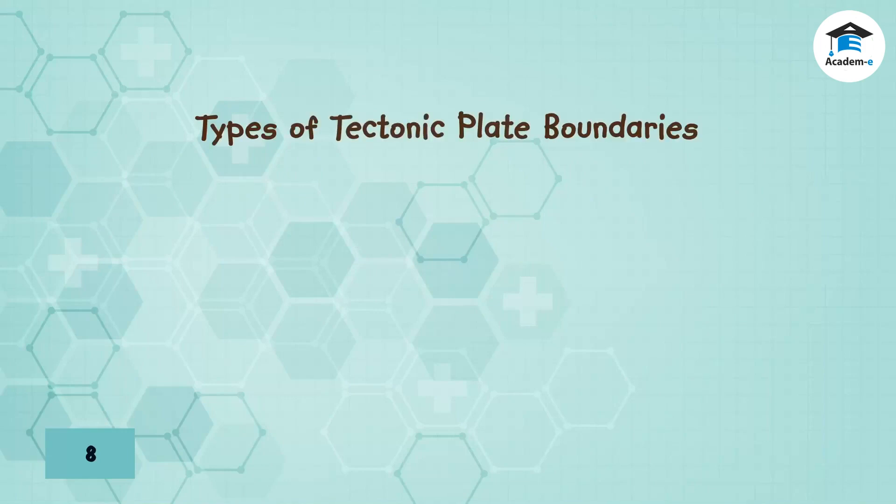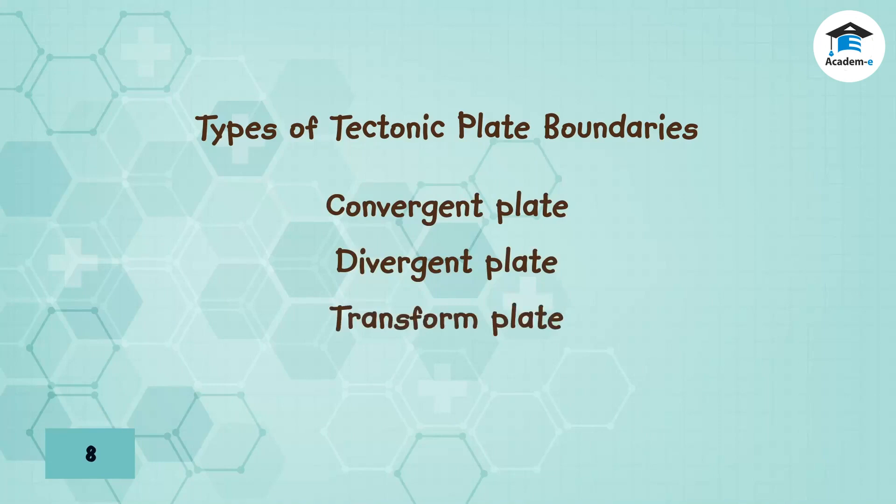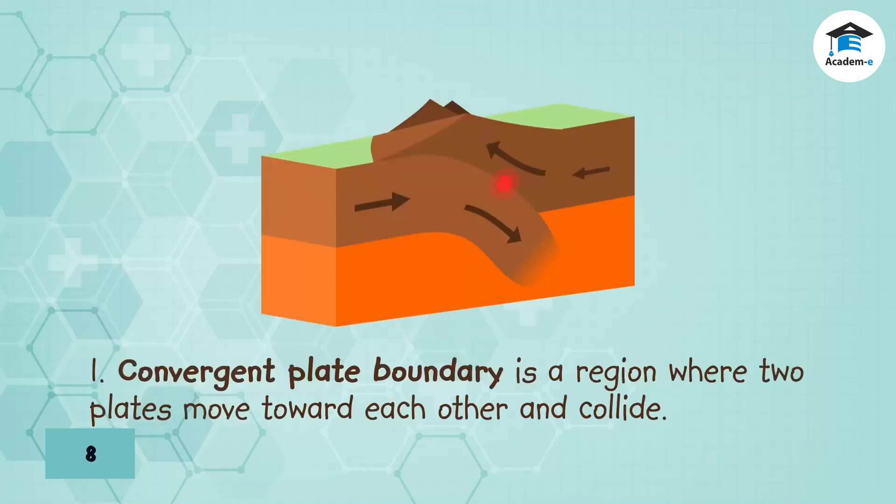Types of tectonic plate boundaries: There are three kinds of tectonic plate boundaries - convergent, divergent, and sliding boundaries. Convergent plate boundary is a region where two plates move toward each other and collide. As they continue to move toward each other, their edges fold, bend, twist, and rise up more, resulting in a row of high mountains or volcanoes.